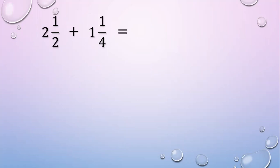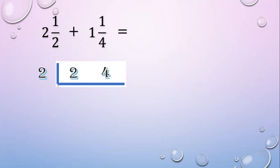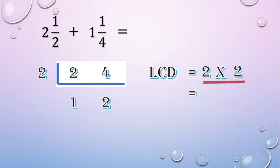Another example. 2 and 1 half plus 1 and 1 fourth. These fractions are dissimilar. So first, get the LCD. Using continuous division, write the denominators: 2 and 4. Divide by a prime common factor of 2. 2 divided by 2 equals 1; 4 divided by 2 equals 2. So the LCD is 2 times 2 equals 4.